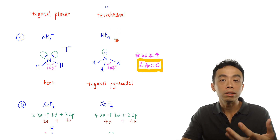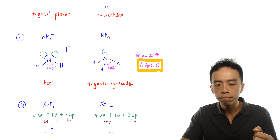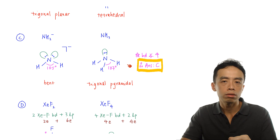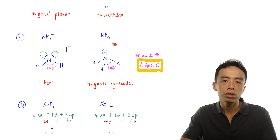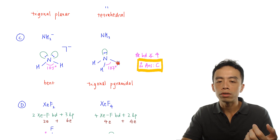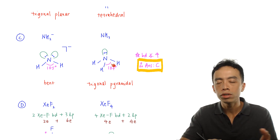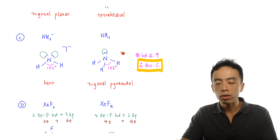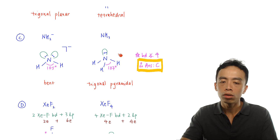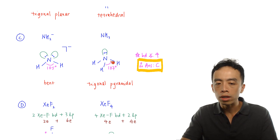For ammonia NH3, we should instinctively know it has three bond pair and one lone pair. The shape with respect to nitrogen is trigonal pyramidal, and the basic shape is tetrahedral. The bond angle is close to 109.5 degrees. According to VSEPR, lone pair repulsion is greater than bond pair repulsion, so the lone pair pushes the bonds closer together. Using the guideline that every lone pair reduces the bond angle by about 2 degrees: 109.5 minus 2 gives approximately 107 degrees for ammonia.